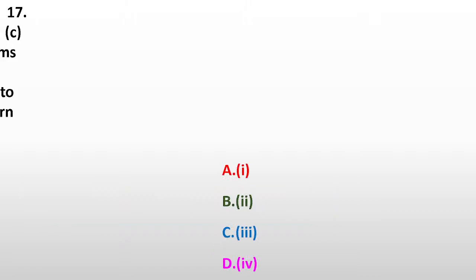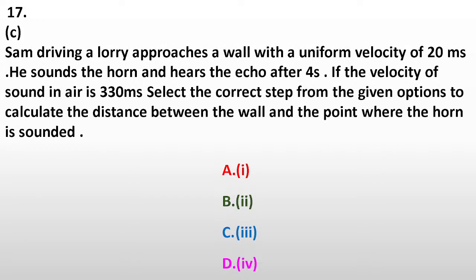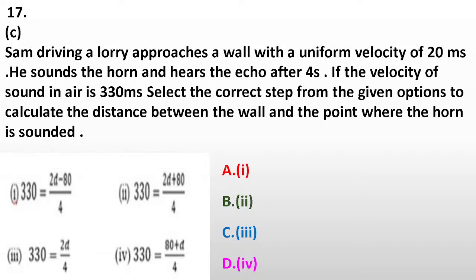Question seventeen C. Sam driving a lorry approaches a wall with a uniform velocity of 20 m/s. He sounds the horn and hears the echo after 4 seconds. If the velocity of sound in air is 330 m/s, select the correct step to calculate the distance between the wall and the point where the horn is sounded. Options: First, 330 = (2D - 80)/4; Second, 330 = (2D + 80)/4; Third, 330 = 2D/4; Fourth, 330 = (80 + D)/4. The correct answer is A, first: 330 = (2D - 80)/4.